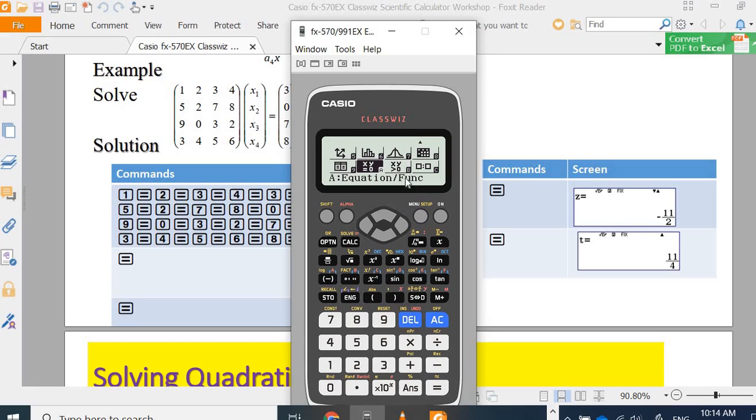In this video we will demonstrate how to use the equation modes in the Casio Classic Calculator to solve simultaneous equation up to 4. So you can solve polynomial equations up to 4. Thank you for your attention.